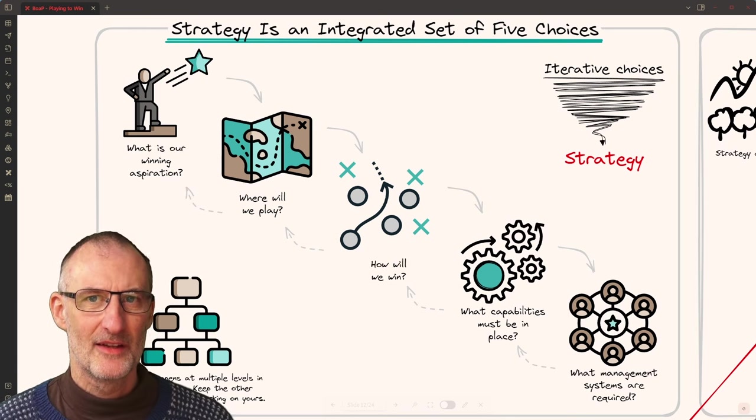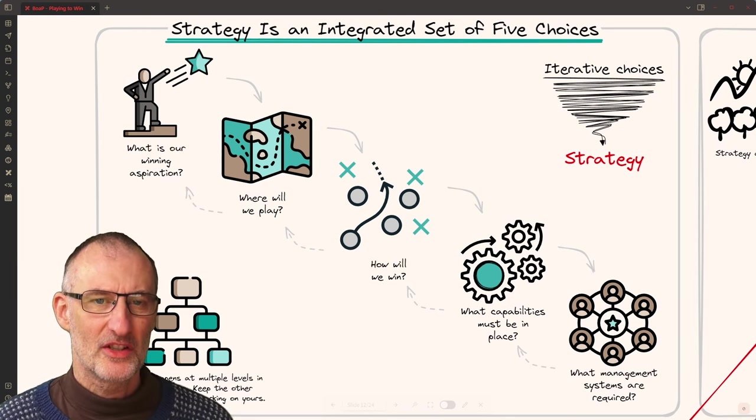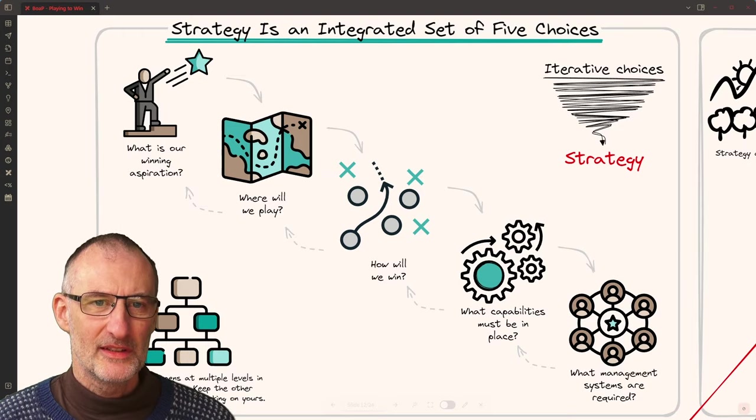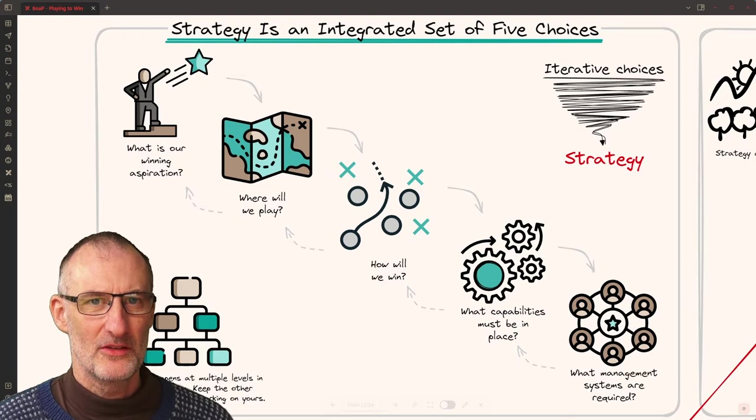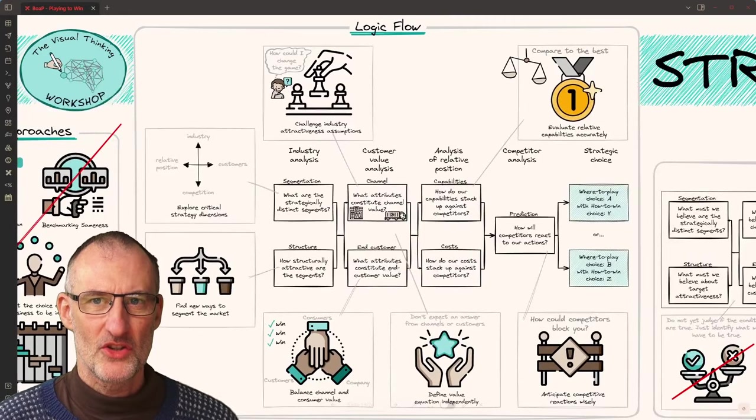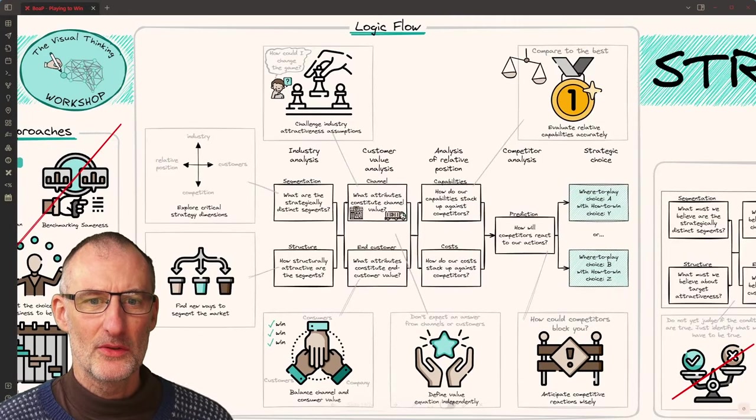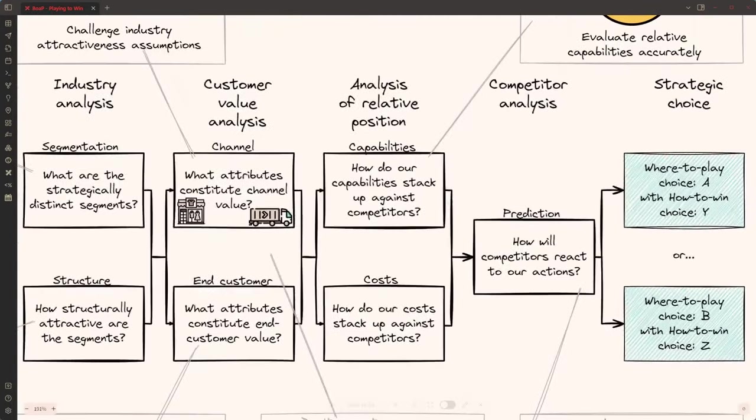Next to these five elements in the strategic cascade, the book contains two additional valuable resources. One is the logic flow. And the logic flow is simply this process of thinking through segmentation structure, customer and channel capabilities and costs, how your competitors are likely to react and creating strategic choices based on this assessment.